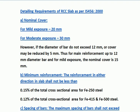Now the detailing requirements of RCC slab as per Indian code IS 456:2000. Nominal cover: for mild exposure, 20 mm; for moderate exposure, 30 mm. However, if the diameter of the bar does not exceed 12 mm, cover may be reduced by 5 mm. Thus, for main reinforcement up to 12 mm diameter bar and mild exposure, the nominal cover is 15 mm.